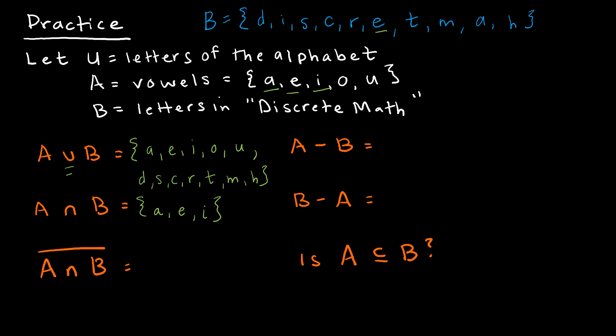I'm saying if I take away any values that are in B, what would I be left with? Well, it's kind of nice because I've already found the intersection, and I know that B includes the values of A, E, I. And so if I was taking A, which is A, E, I, O, U, and taking away anything in set B, I would be left with O, U.